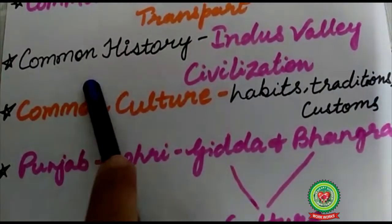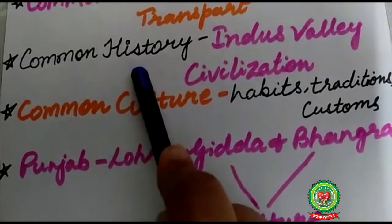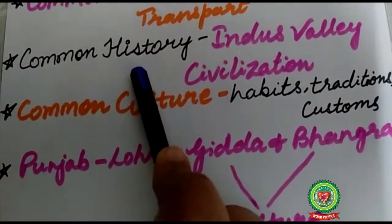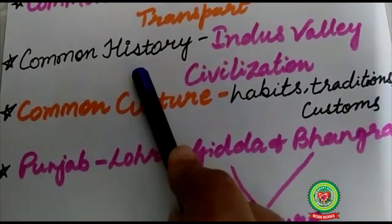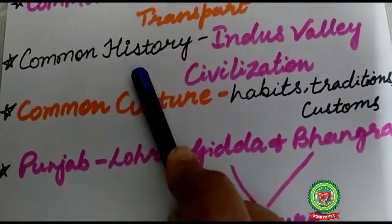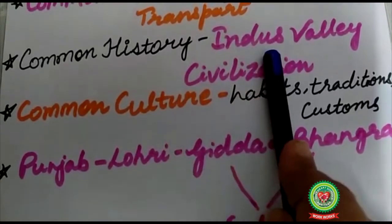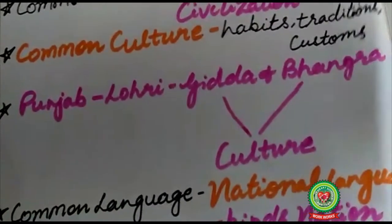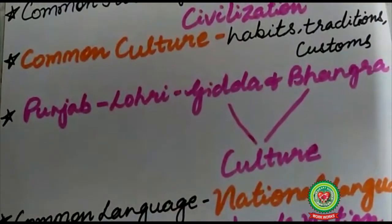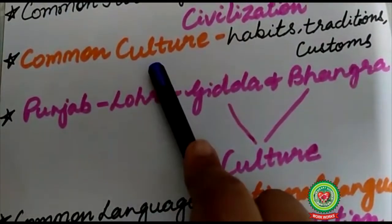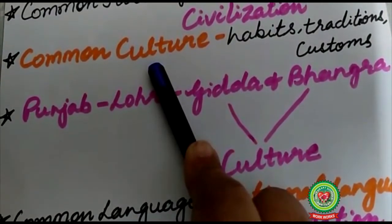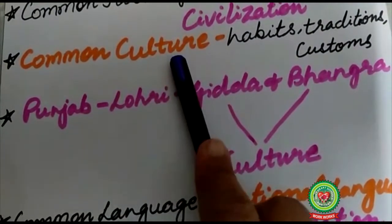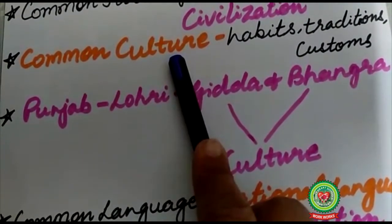The next factor is common history. History is a common factor in nationality. For example, the Indus Valley Civilization is a common factor for people of the northern plains. We are living in the same area where the Indus Valley people lived, so we share a common past with those people. This factor ties us with the Indus Valley civilization.